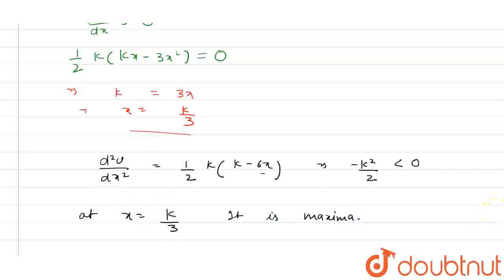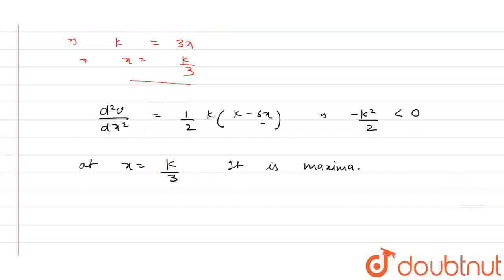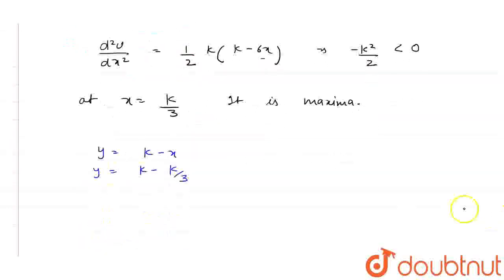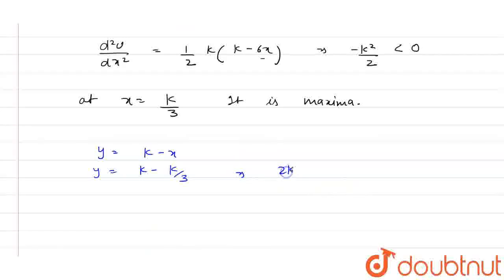Now if we put the value of X we get Y equals K minus X, Y equals K minus K/3. From here we can say that Y equals 2K/3.